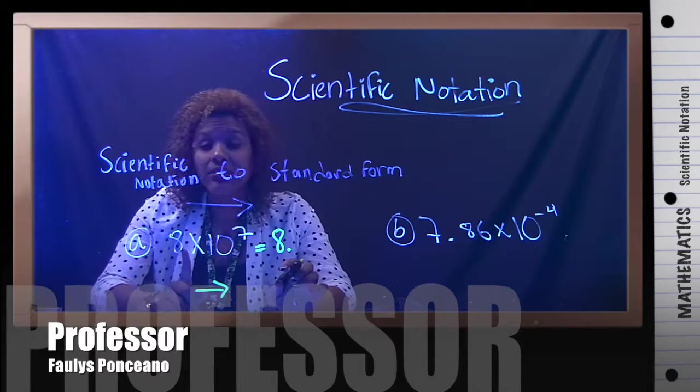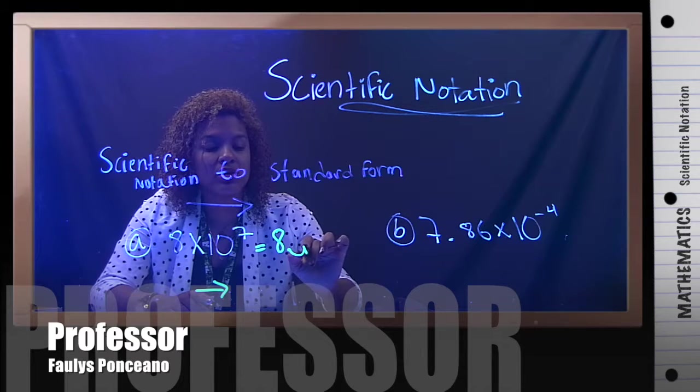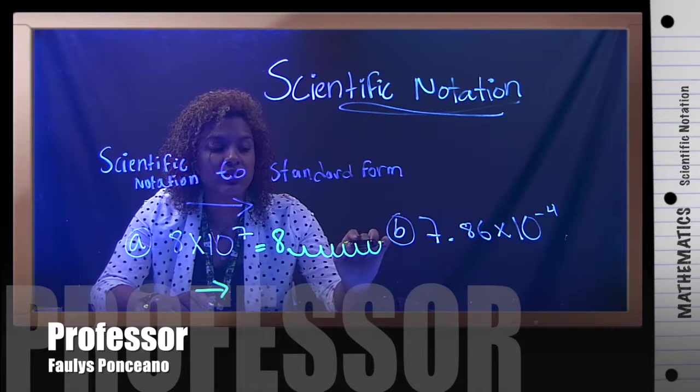So, in this case, I have 9. I'm going to have seven zeros. So, I go one, two, three, four, five, six, seven. Right?